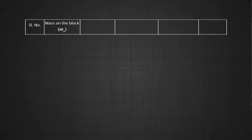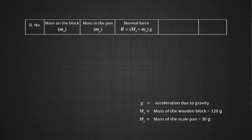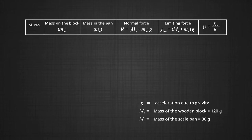The first column has mass on the block. The next column has mass in the pan. Then we calculate the normal force, which is the mass of the block plus what we place on the block. The next column is limiting friction, which is the pull — the weight of the pan plus the weights inside it. The last column is for mu, which is the ratio of force of friction to the force of normal reaction.